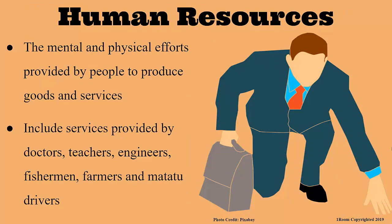The third category is human resources, which refers to the mental and physical efforts provided by people to produce goods and services. Examples include doctors, nurses, teachers, engineers, and fishermen — the list is endless. Human resources can be skilled, semi-skilled, or unskilled.